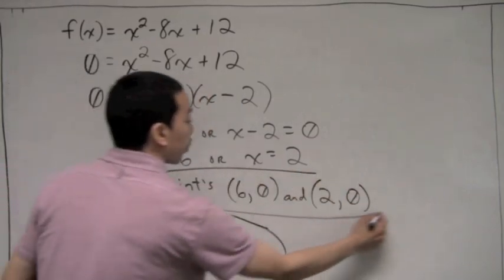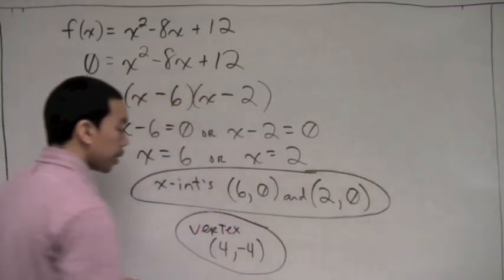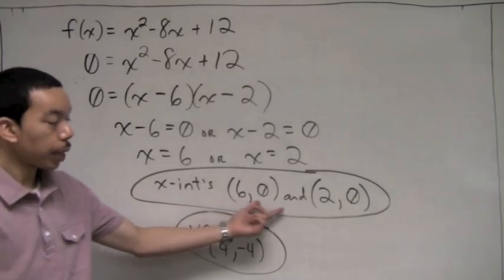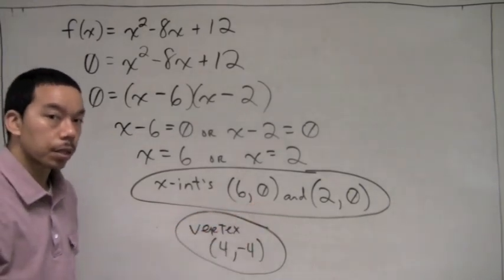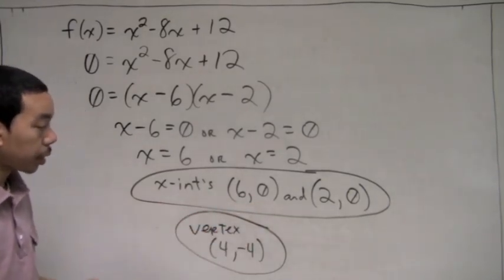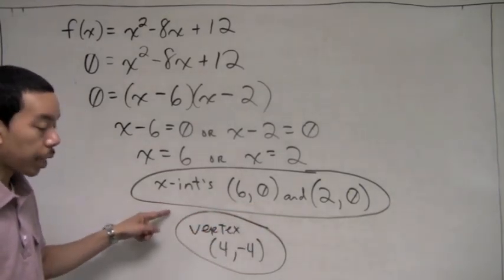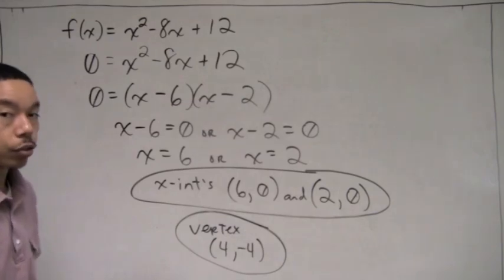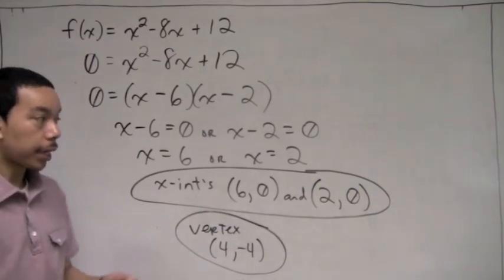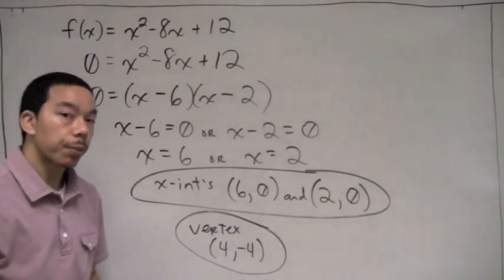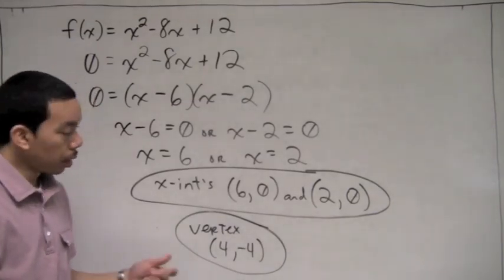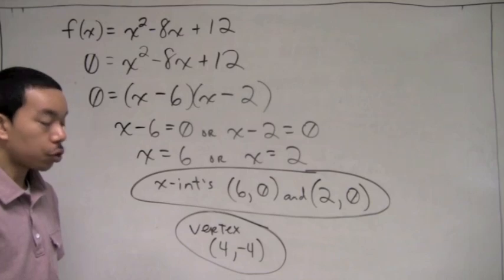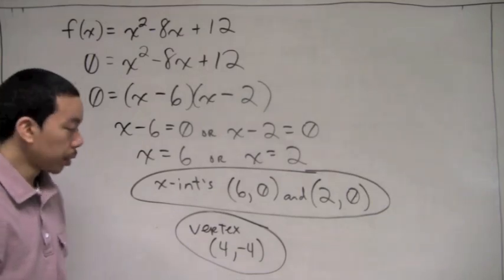Now you have the vertex and the two x-intercepts, so you're able to graph that quadratic function. Take out a sheet of graph paper, use a straight edge to draw your Cartesian coordinate system, and go ahead and graph.